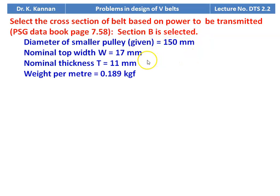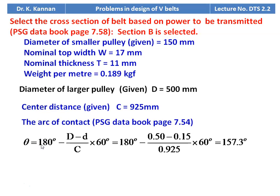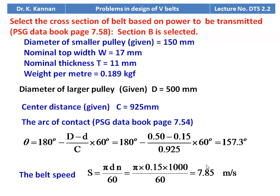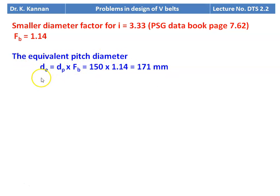Section B details: d = 150 mm (given), nominal top width = 17 mm, nominal thickness = 11 mm, weight per meter = 0.189 kgf. Larger pulley diameter D = 500 mm (given), center distance C = 925 mm (given). Arc of contact θ = 180 − (0.5 − 0.15)/0.925 × 60 = 157.3 degrees. Belt speed S = πDn/60; using smaller pulley: π × 0.15 × 1000 / 60 = 7.85 m/s.